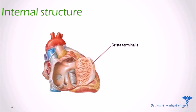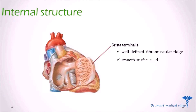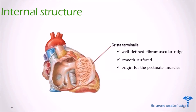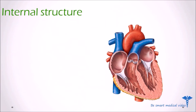Next is the crista terminalis. The crista terminalis is a well-defined fibromuscular ridge formed by the junction of the sinus venosus and the primitive right atrium. It is generally smooth-surfaced, and the crista terminalis provides the origin for the pectinate muscles.